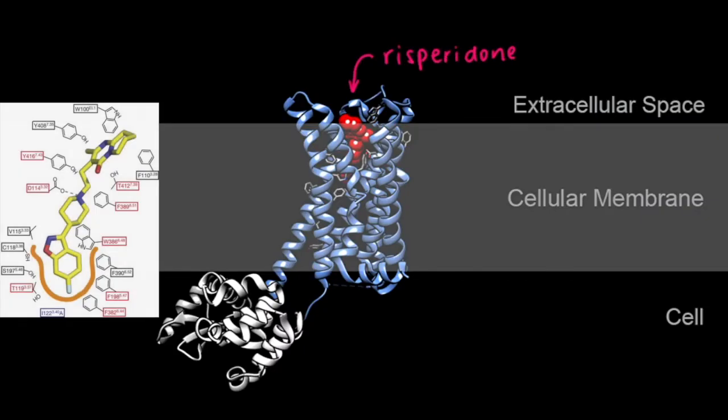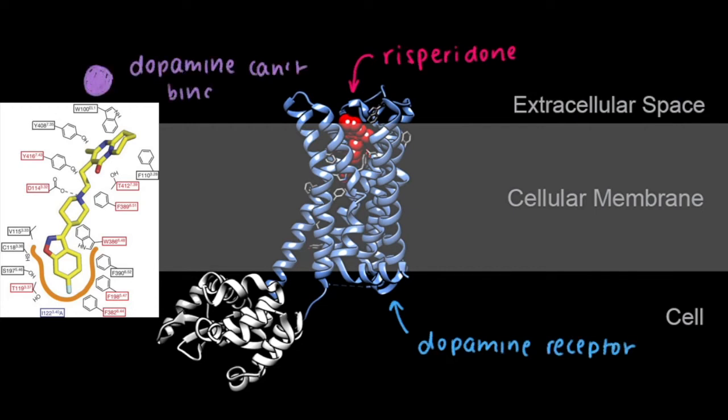Antipsychotic drugs, specifically risperidone, bind to neurotransmitters like the D2 receptor and inhibit dopamine from binding, which alleviates positive, negative, and cognitive symptoms.